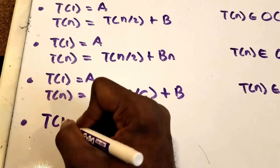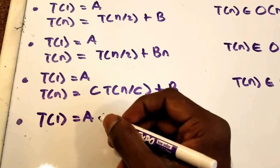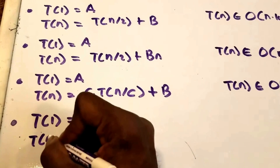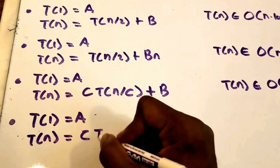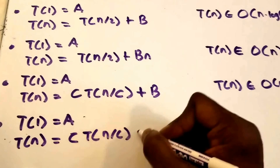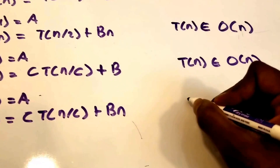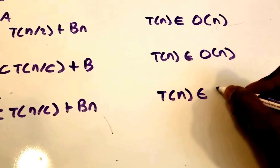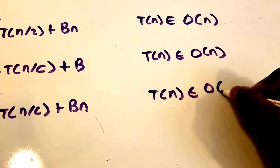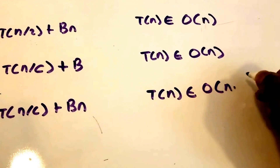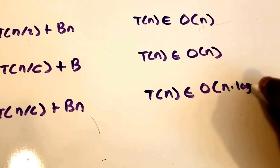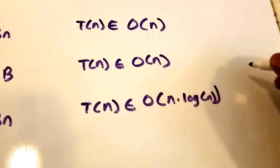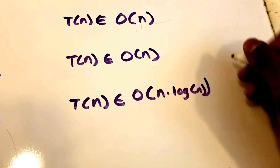Let's say we have T(1) = a for our base case, and then for a recursive case T(n) = C·T(n/C) + B·n. Then the time complexity for T(n) is O(n log n), and a popular example for this would be the merge sort algorithm.